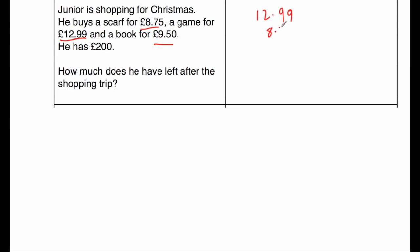So £12.99, £8.75, and £9.50. When we add those up: 9 plus 5 is 14, so put the 4 down, carry a 1. 9 plus 7 is 16, plus 5 is 21, plus 1 is 22, so put the 2 down, carry a 2. 2 plus 8 is 10, plus 9 is 19, plus 2 is 21, so put 1 down, carry a 2. And 1 plus 2 is equal to 3. So altogether he spends £31.24.